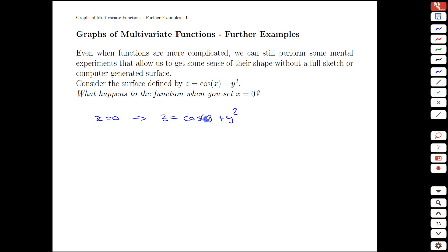If we do that substitution then we end up with the graph of z equals cos of 0 plus y squared, but cos of 0 is just 1, so we end up with z equals 1 plus y squared assuming that x equals 0.